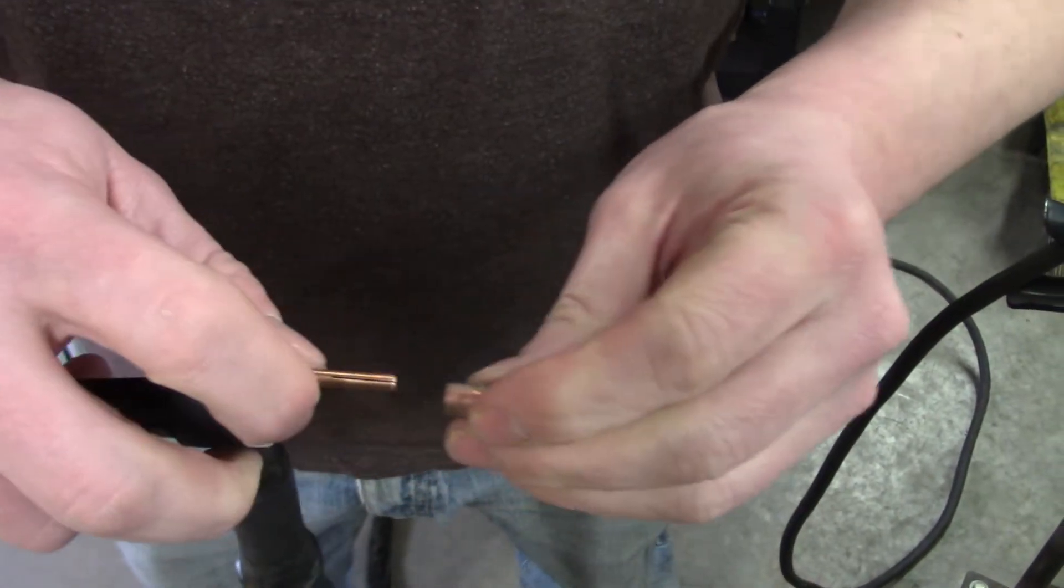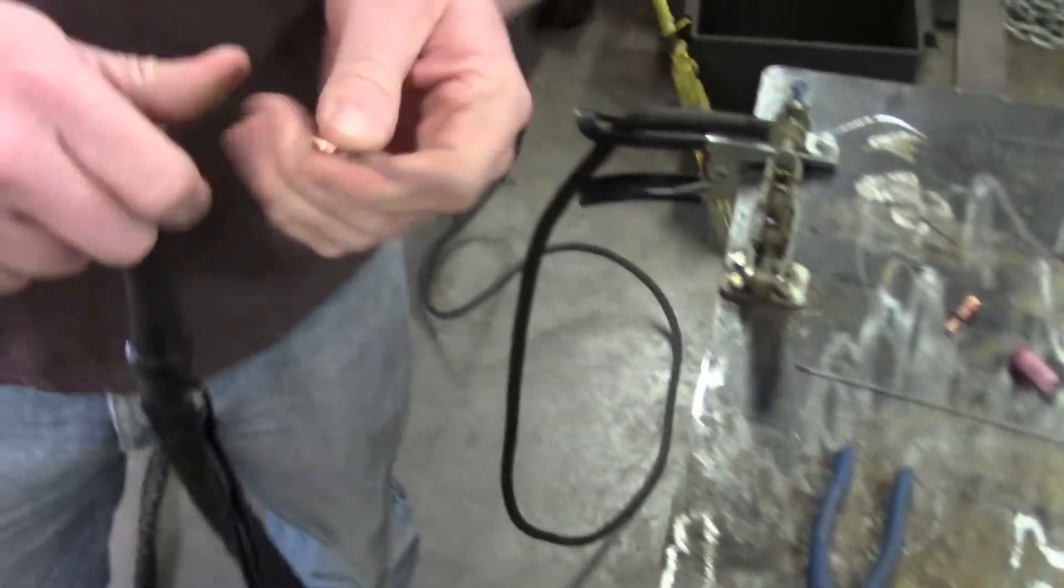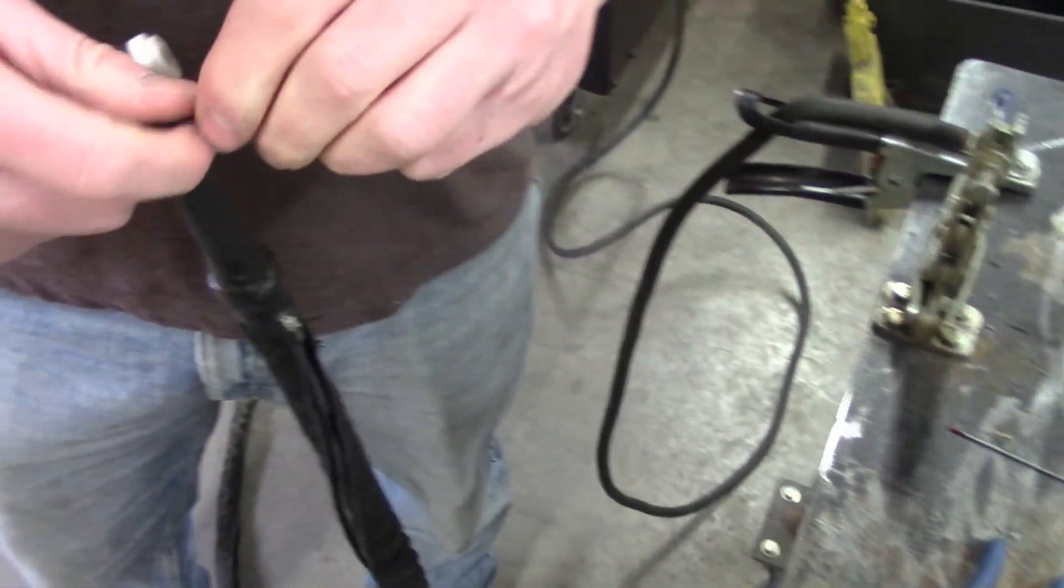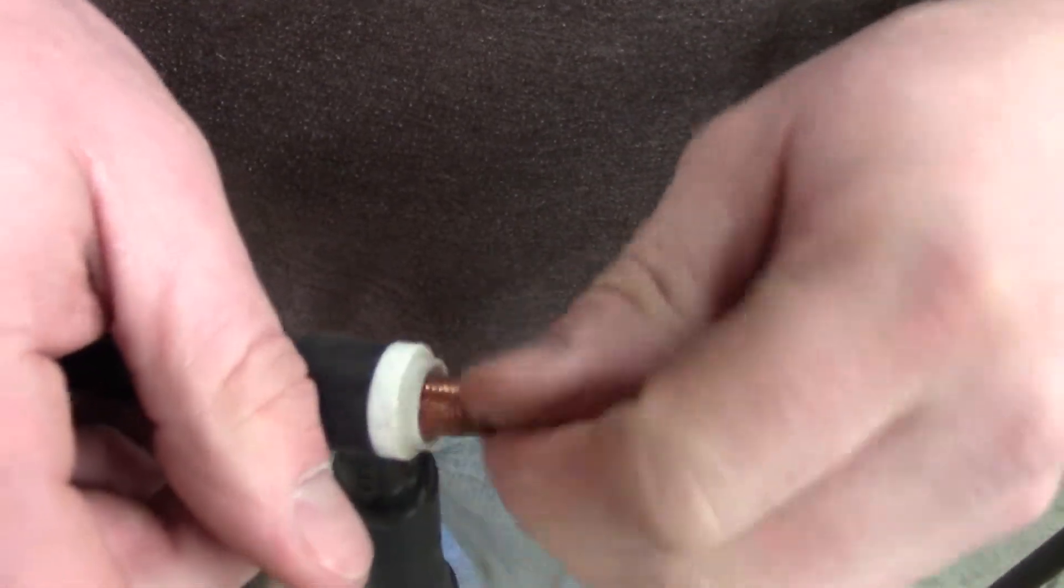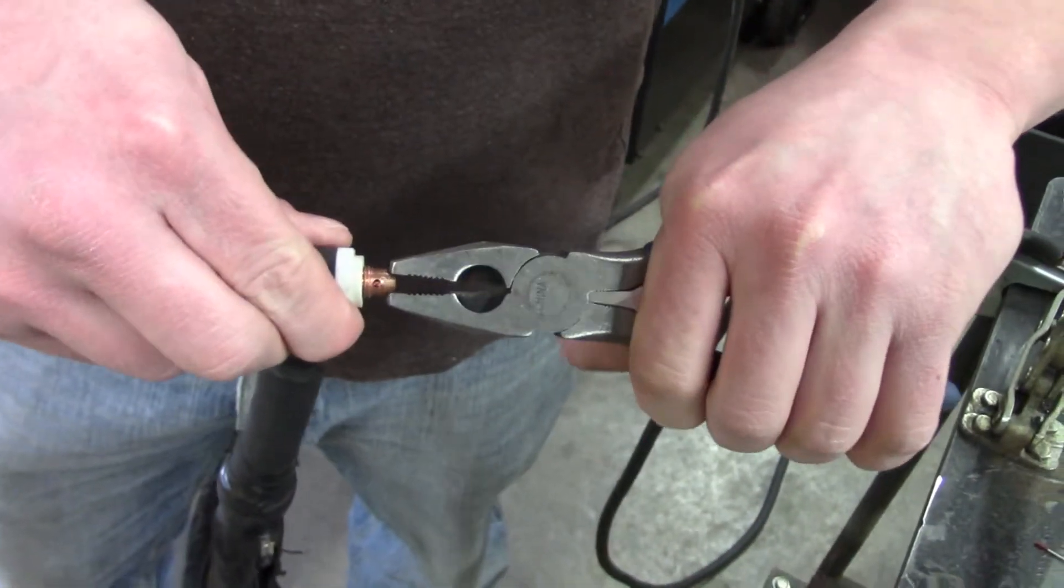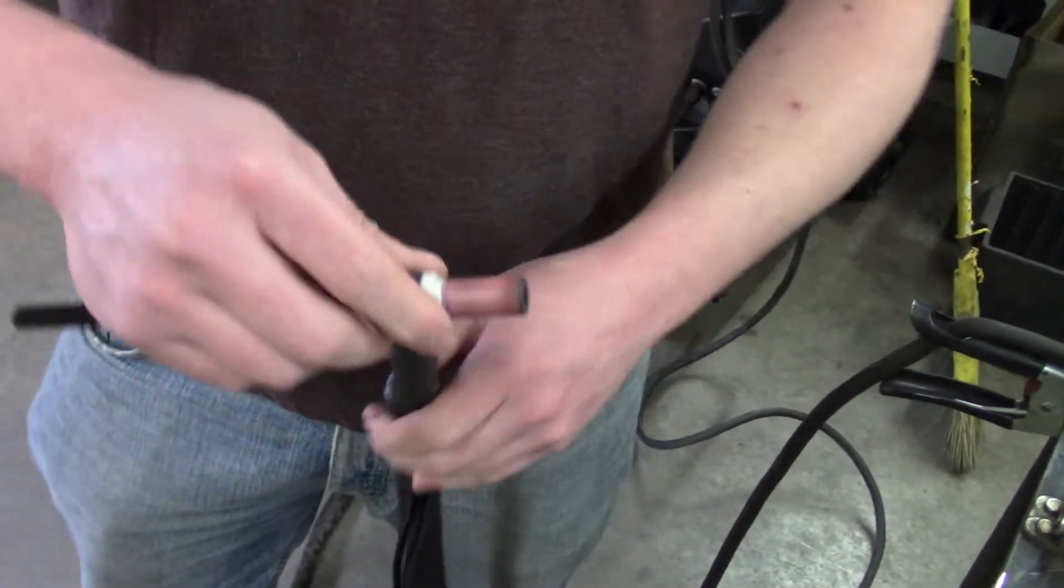There's the collet holder for 1/16 inch. Here's our 1/8 inch. You take the eighth, put it in the back there, put your collet holder over it, screw it on there, just snug it. Don't crank the ever-loving daylights out of it. Then you put your cap back on, and you're ready to do your tungsten.